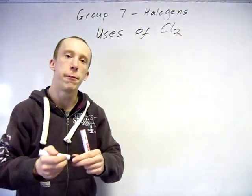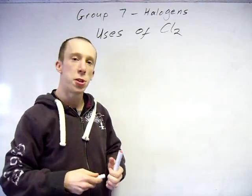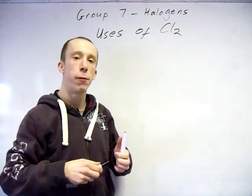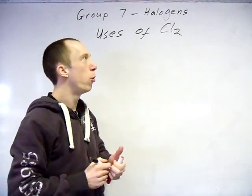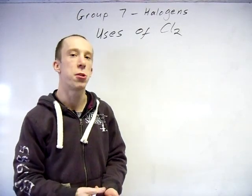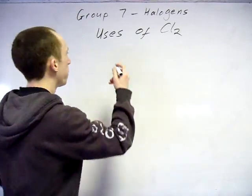So final bit for the Group 7 is the uses of chlorine. So yes, it was used as a chemical warfare weapon during World War I. Tends not to be in the mark scheme though, so the main thing is it kills microorganisms.